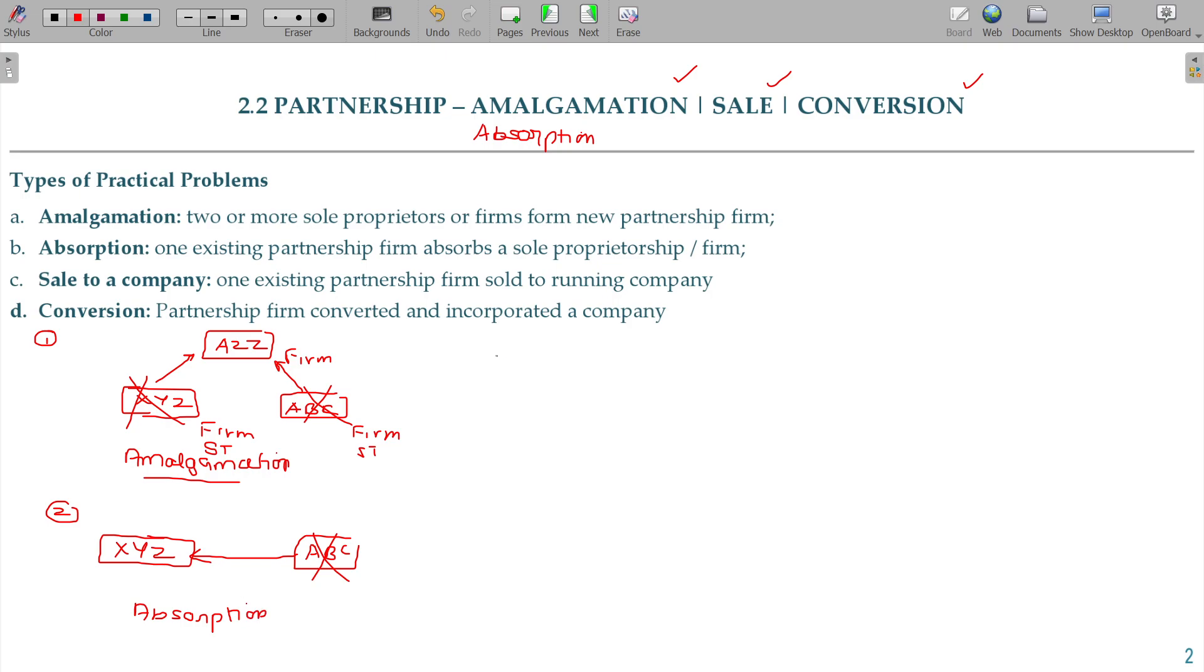And third, XYZ limited company, ABC is a firm. If the firm sells to XYZ limited company, that is sale to a company. Otherwise, it is also a part of absorption. We can call it absorption.